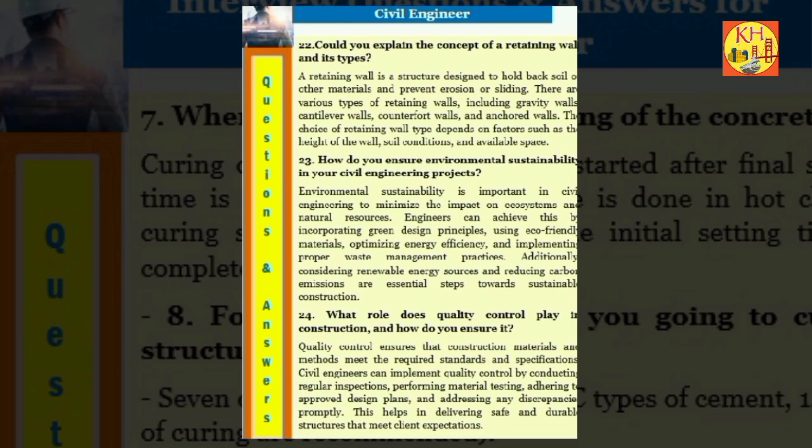Question 24: What role does quality control play in construction and how do you ensure it? Quality control ensures that construction materials and methods meet the required standards and specifications. Civil engineers can implement quality control by conducting regular inspections, performing material testing, adhering to approved design plans, and addressing any discrepancies promptly. This helps in delivering safe and durable structures that meet client expectations.